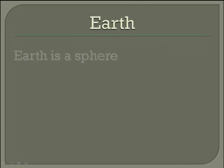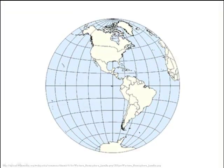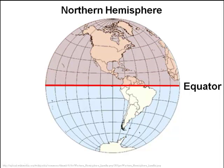The Earth is a sphere — think of a ball. Half a sphere is called a hemisphere. Here we have a representation of the globe in a spherical format, and here comes that imaginary line that separates the top half from the southern half, and that is called the equator. From the equator to the north we can see the northern hemisphere, and from the equator down, to the south, we can see the southern hemisphere.